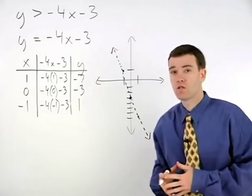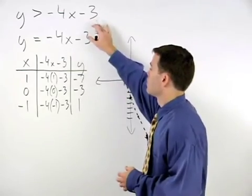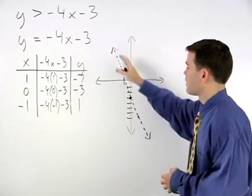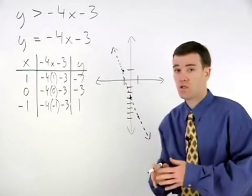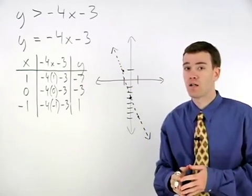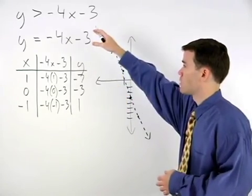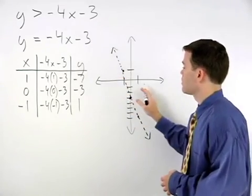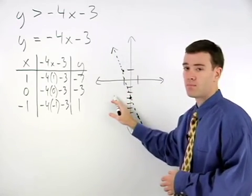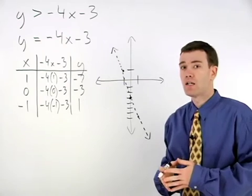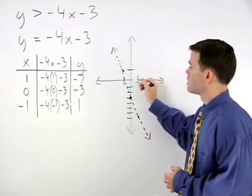The solutions to this inequality will all lie on either one side or the other of this boundary line. So to determine where the solutions lie, we choose a test point to plug back into the original inequality from either side of the boundary line. Usually, the easiest point to try is the origin, 0, 0.